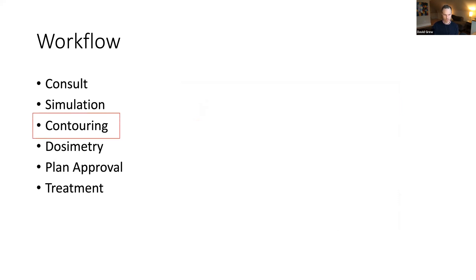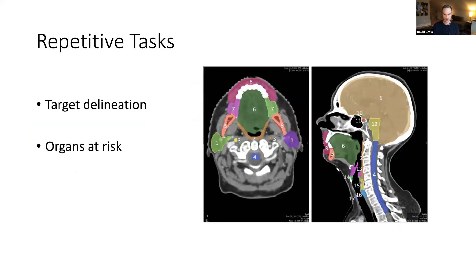Most of today's discussion centers on the contouring step of this workflow. It can be a high-friction step and is ripe for automation. In radiation oncology, the main repetitive tasks are target delineation — identifying parts of the body that have cancer or are at risk for recurrence, such as lymph nodes — and drawing or contouring the organs at risk. This slide shows the many organs at risk present for CNS or head and neck cancers.